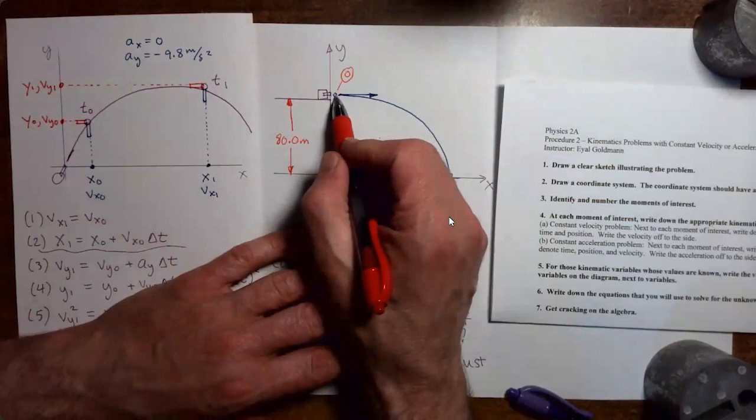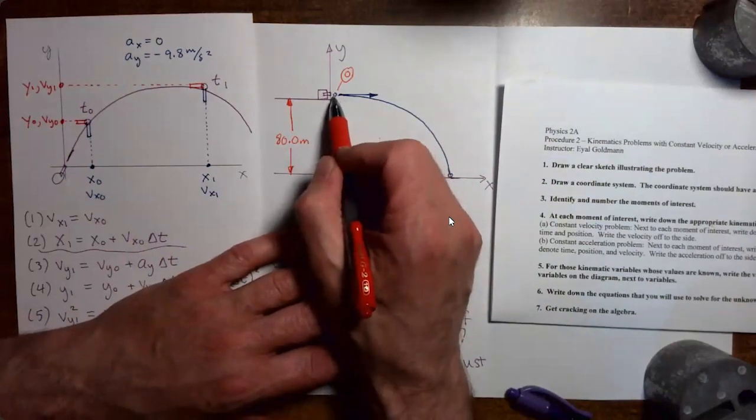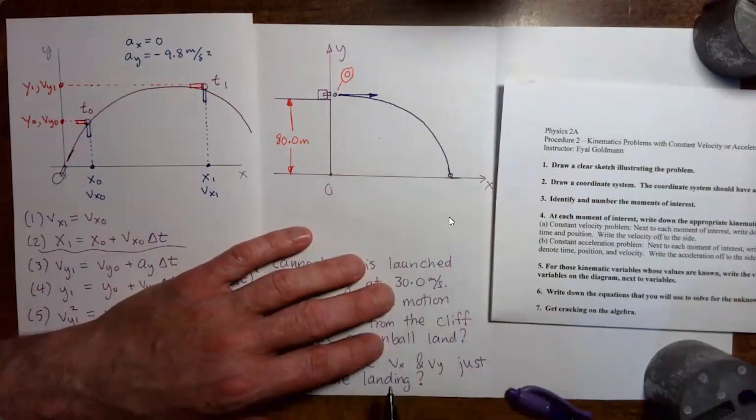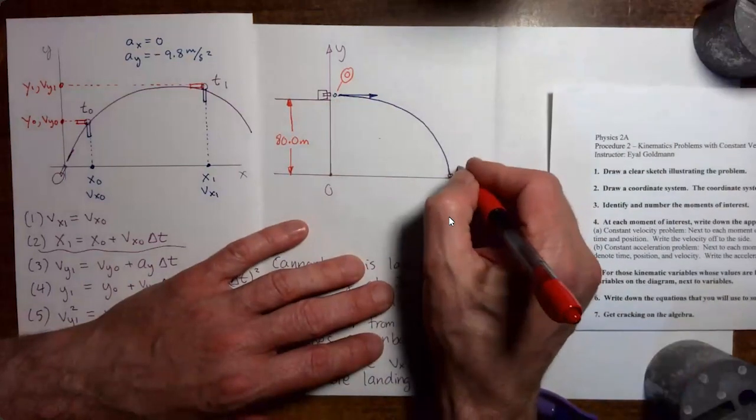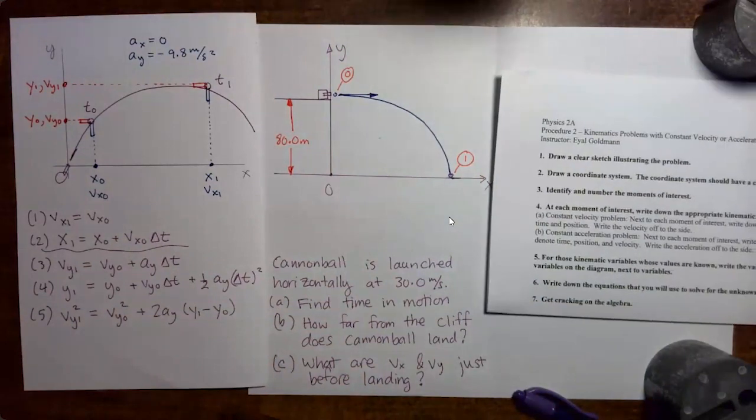The cannonball is not freefalling while it is being launched. It is freefalling immediately after and from there until right before it hits the ground. So moment zero will be right after the launch. And moment one will be just before the cannonball hits the ground.